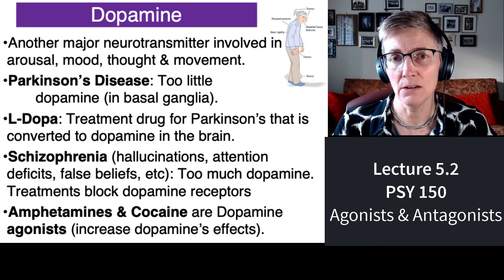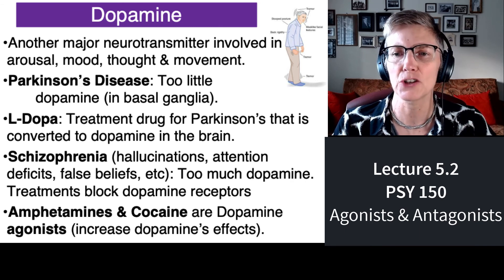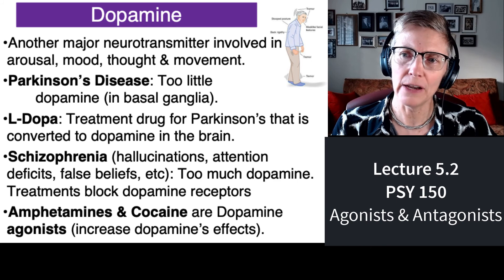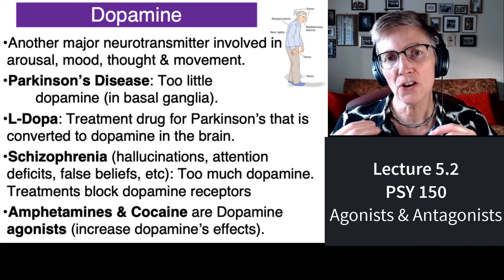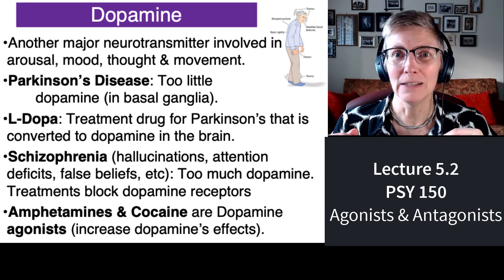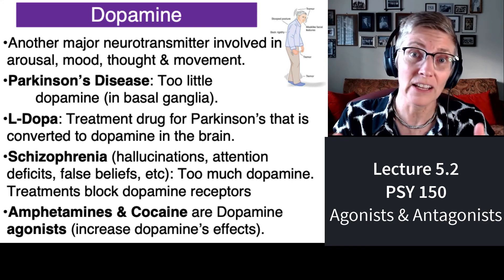Amphetamines and cocaine are two psychoactive drugs we'll discuss in the next mini lectures. They are agonists — they increase dopamine's effects. Both amphetamines and cocaine, if taken for a long period of time, can give rise to psychosis: problems with seeing or hearing things that aren't there. That's all I'm going to tell you about agonists and antagonists. In Lecture 5.3, we will talk about principles of psychopharmacology, so come right back.